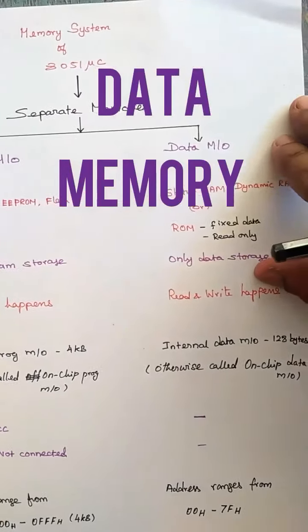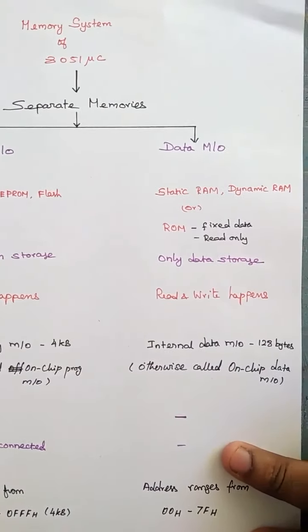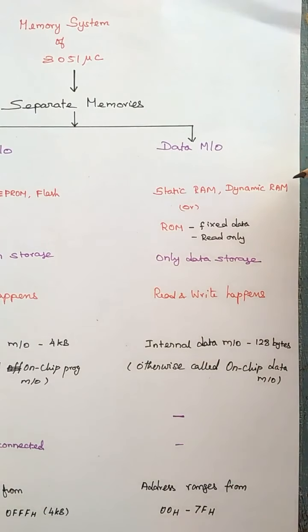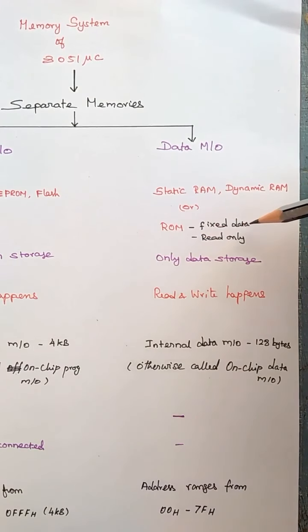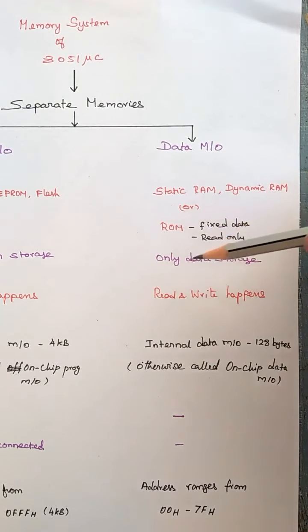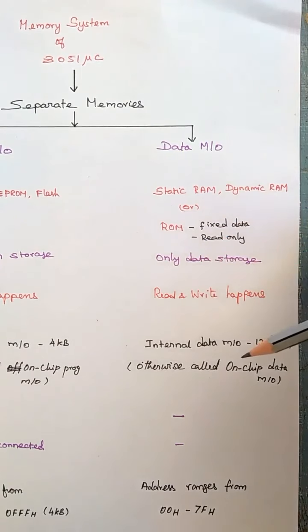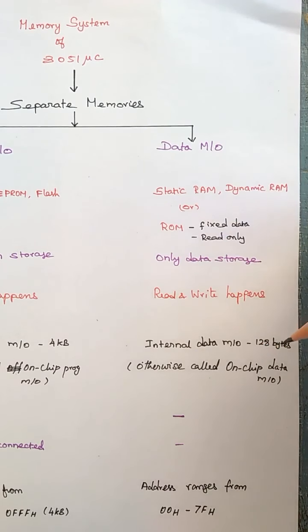For data memory, static RAM or dynamic RAM is used. Sometimes data can be held in read-only memory, meaning fixed data that can only be read. The 8051 microcontroller has internal data memory of 128 bytes, available inside the chip, called on-chip data memory.